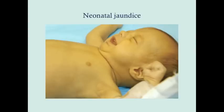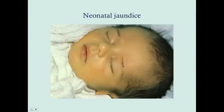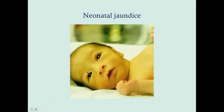Here's what neonatal jaundice looks like — you can see a kind of gold tinge to the baby. Not all neonatal jaundices look alike; it might be really obvious or it might just be really slight. A good place to look is the eyes — scleral icterus is always jaundice. Particularly when you're dealing with darker-skinned babies, the eyes are going to be a good place to look.